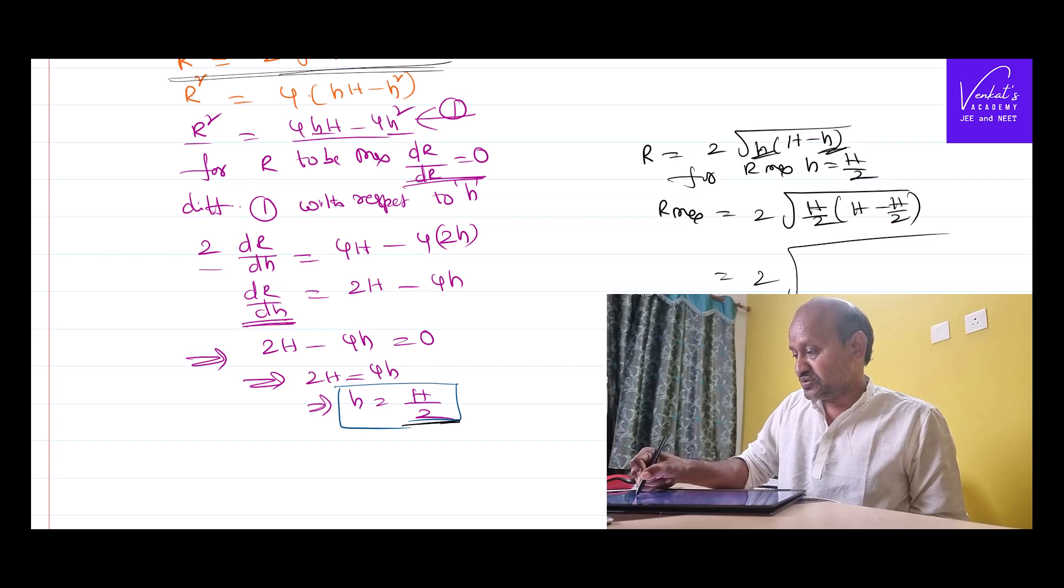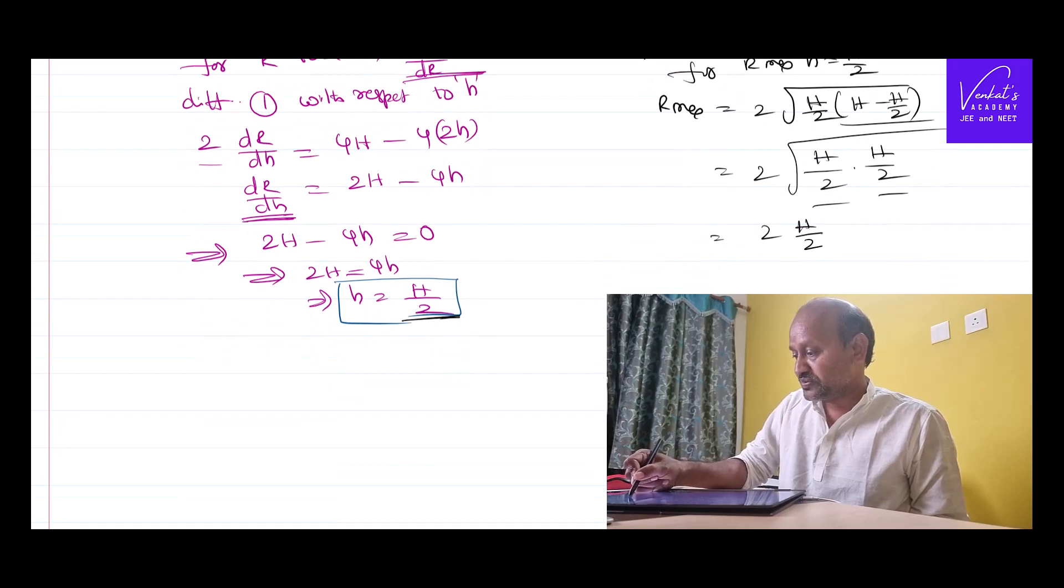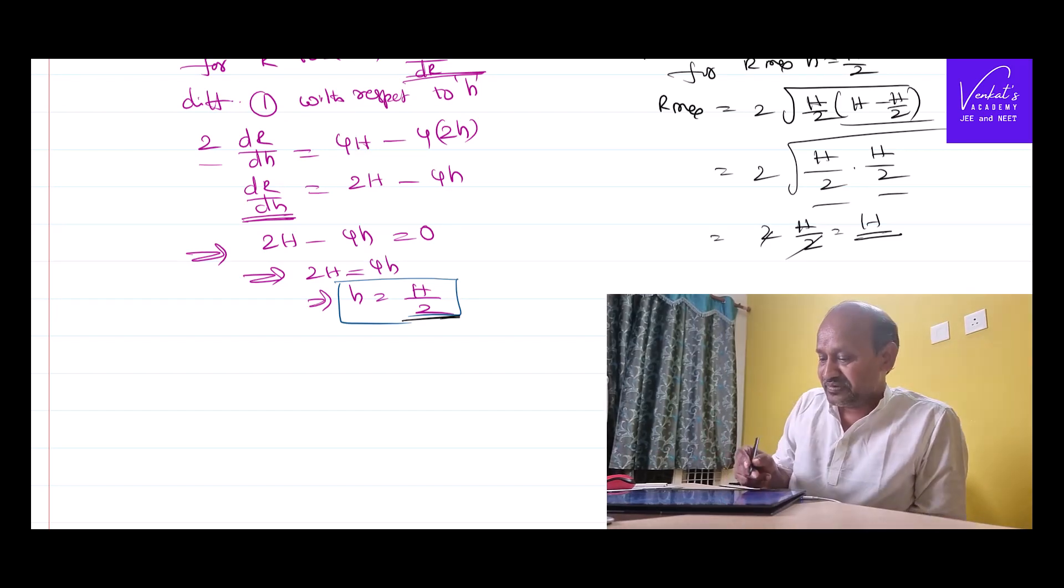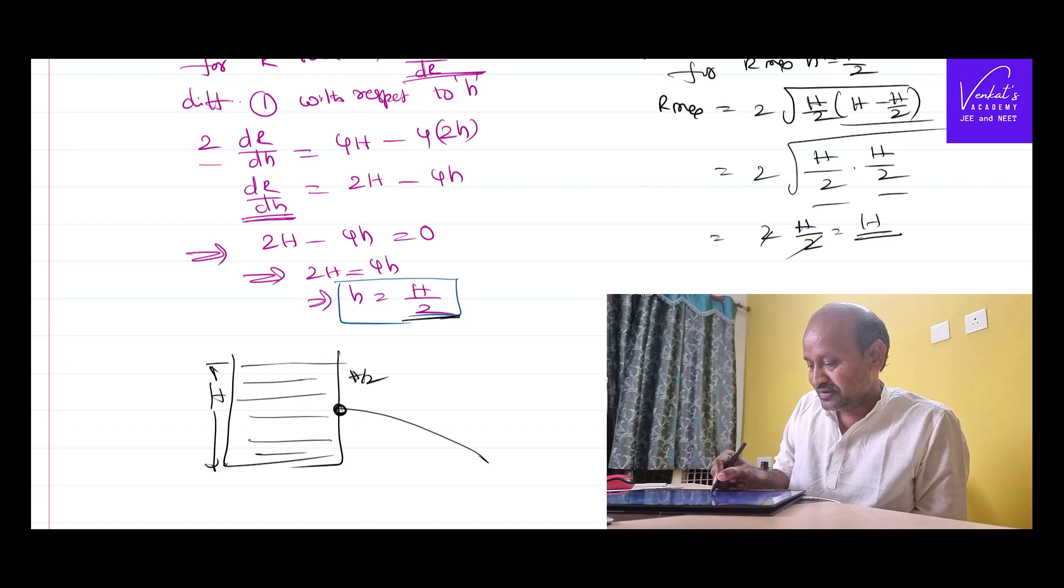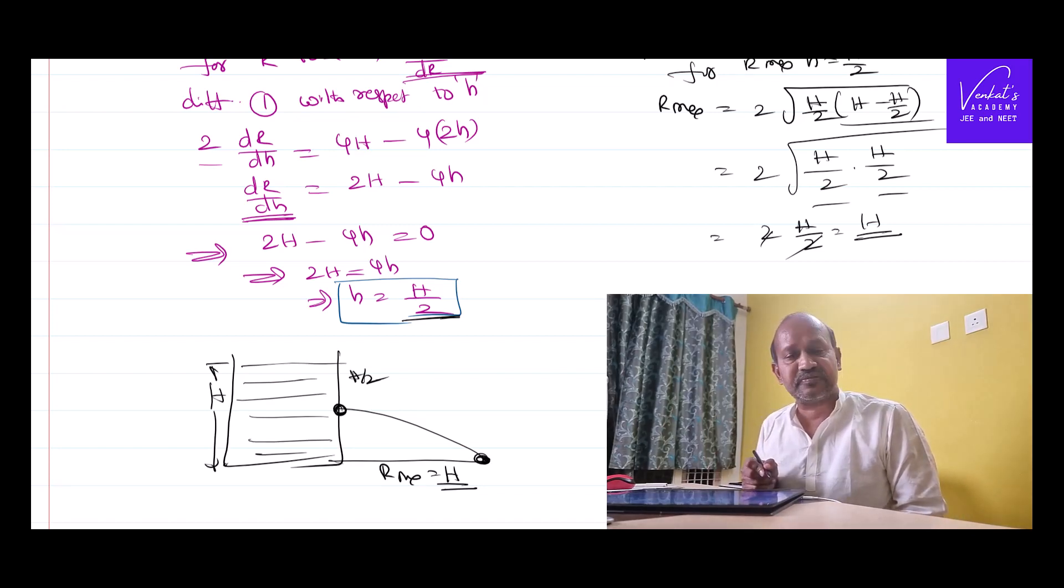So 2 into H by 2. H minus H by 2 is another H by 2. So the value will become H itself. A surprising fact is, if this is filled with liquid up to a height H, you punch a hole exactly at the half of the height, it will go to the range maximum, to the maximum height itself. That's the understanding of that. Thank you for watching. Have a great day.